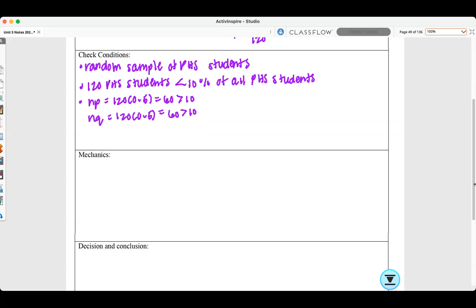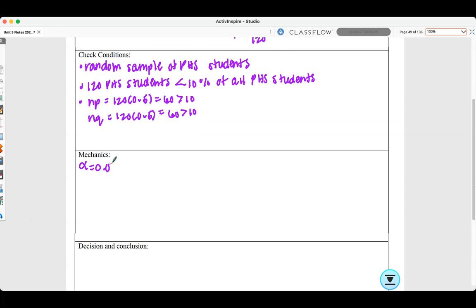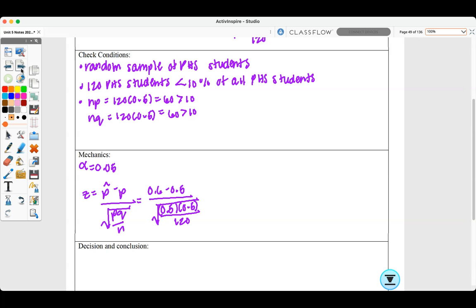So we're going to go through and do our mechanics. Here, we were not given a significance level, so we're going to use alpha equals 0.05. We need to find Z. Z is P hat minus P all over the square root of P times Q divided by N. So this would be 0.6 minus 0.5 all over the square root of 0.5 times 0.5 divided by 120. And we can go to our calculator and run the test on it.